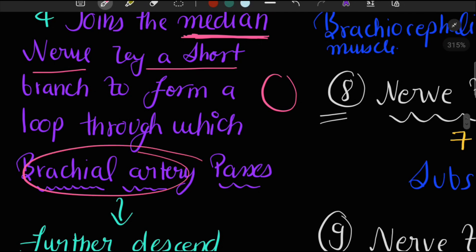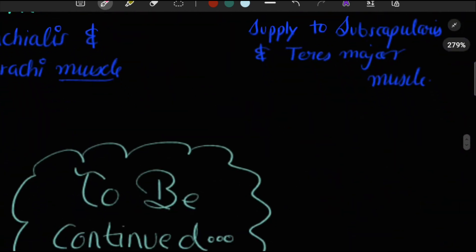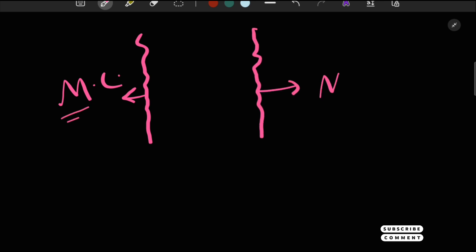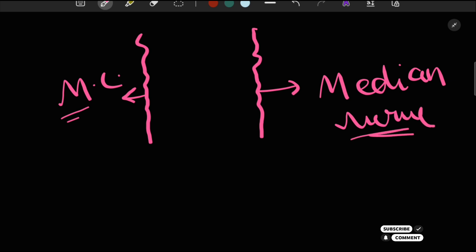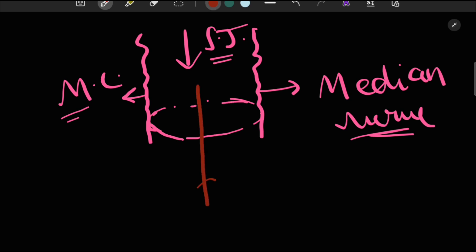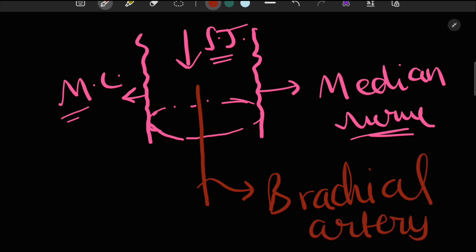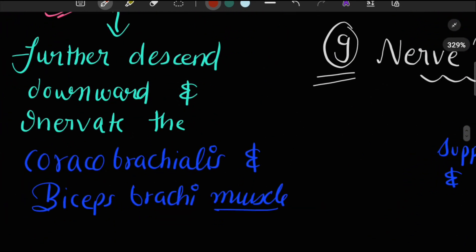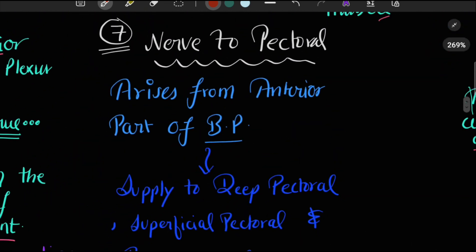To clarify: the musculocutaneous nerve gives a branch to the median nerve, forming a loop through which the brachial artery passes — not the brachial nerve. For more on the brachial artery, refer to the video on blood supply to the forelimb on this channel. After forming the loop, the musculocutaneous nerve further descends to innervate the brachialis and biceps brachii muscles.